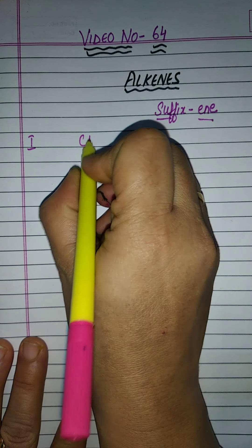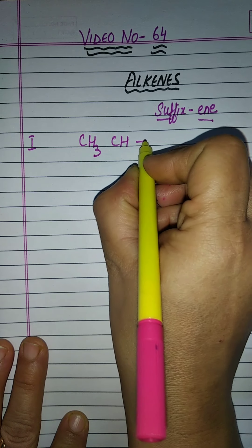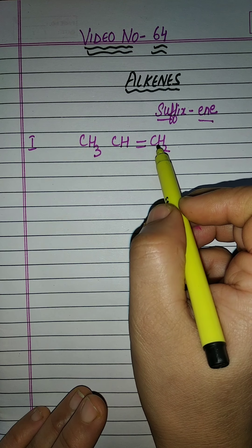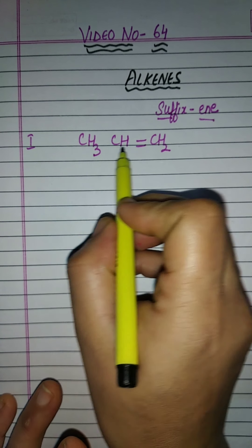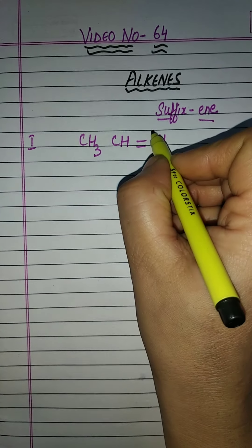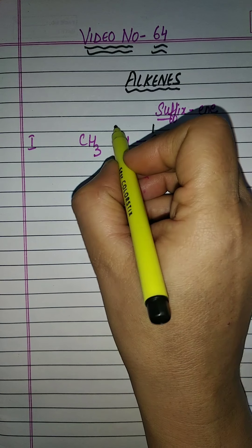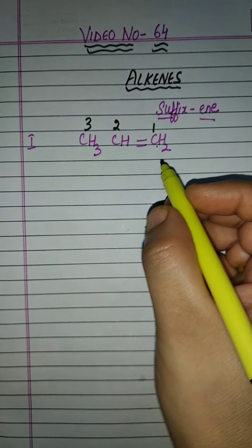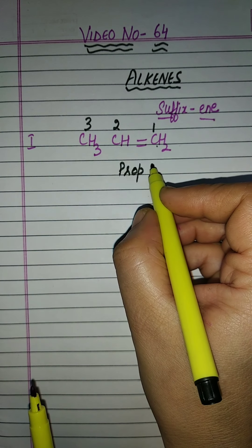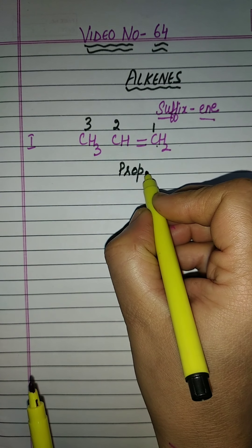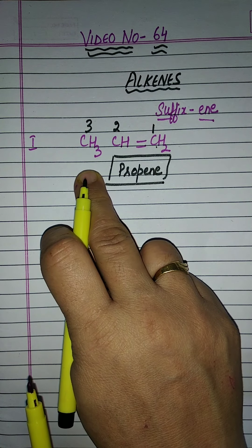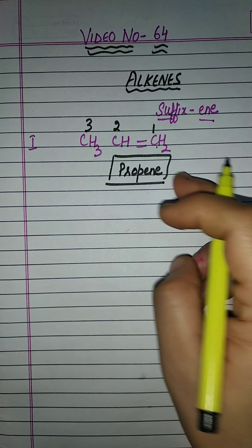Let's discuss the first example. Suppose the compound is CH₃CH=CH₂. If we start numbering from one side, the double bond gets position number 1, but if we start from the other side, it gets position number 2. Since the double bond should get the least position, we start numbering from that carbon, giving us 1, 2, 3. As there are 3 carbon atoms, the word root is 'prop', and since a double bond is present as a functional group, the suffix used is 'ene'. So the name of this organic compound is propene.